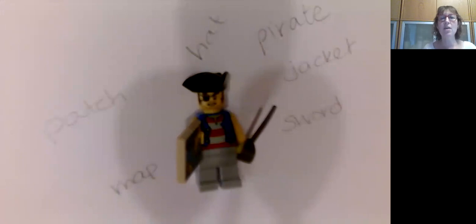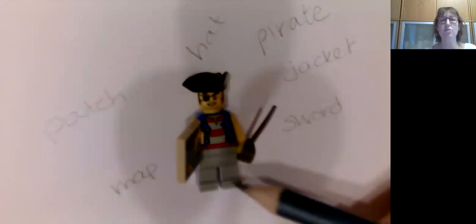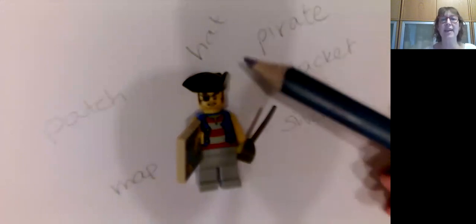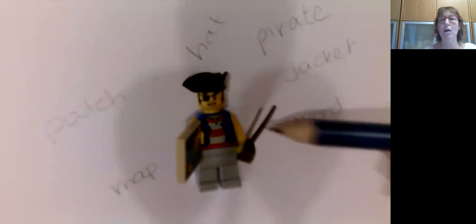So those are nouns. There are other ones too — he's got trousers, face, hair, arms. All of those, because they are objects, they are things, are all nouns.